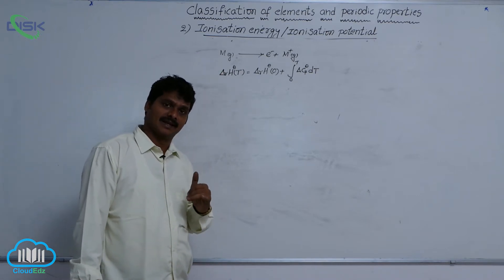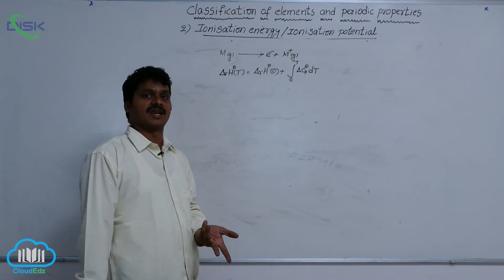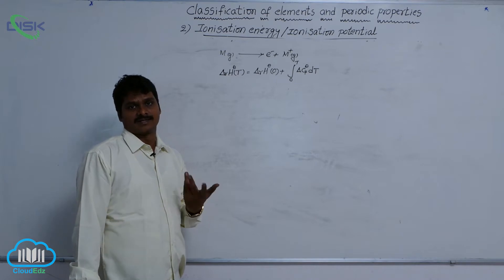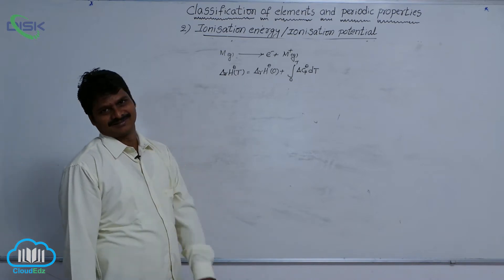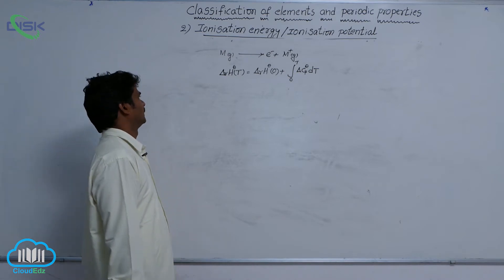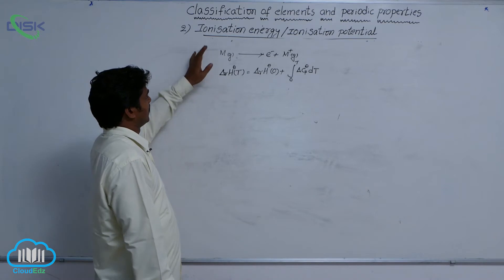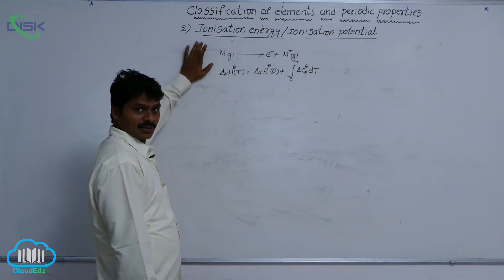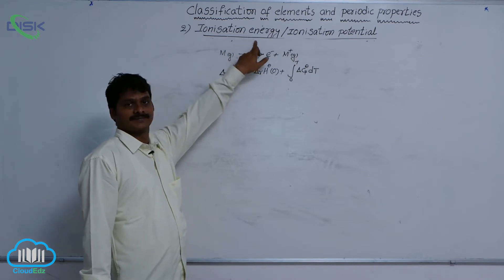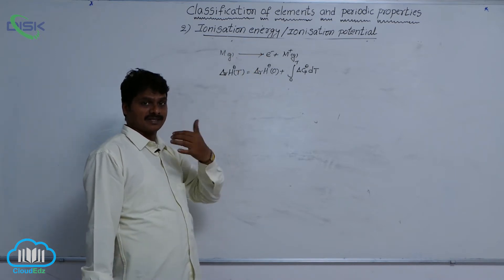Ionization energy is the energy required to remove an electron from the valence shell of a neutral, isolated, gaseous atom at 0 Kelvin. So at T Kelvin we call it ionization enthalpy. At 0 Kelvin we use the word ionization energy, but at T Kelvin we use ionization enthalpy.